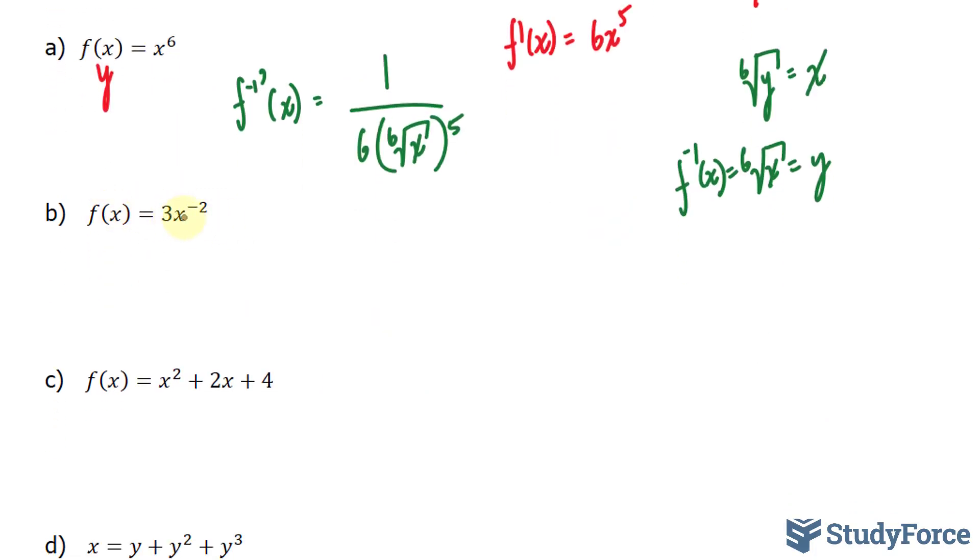This time we have 3x raised to the power of negative 2. So I'll start with the power rule, bring this negative 2 down as a factor. 3 times negative 2x and subtract 1 from negative 2. That's negative 3. This is our derivative.